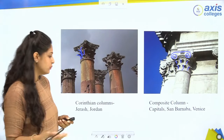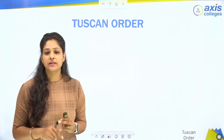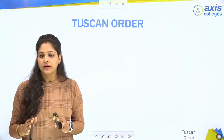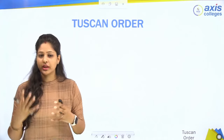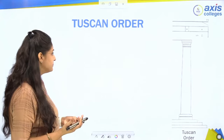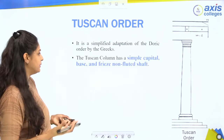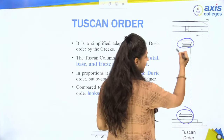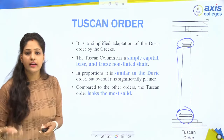Tuscan order is a simplified version of the Doric order. It has no flutes, it is slender, and it has a lot of structural strength. The capital is very simple, the base is simple, and you will not see any flutes in the shaft.